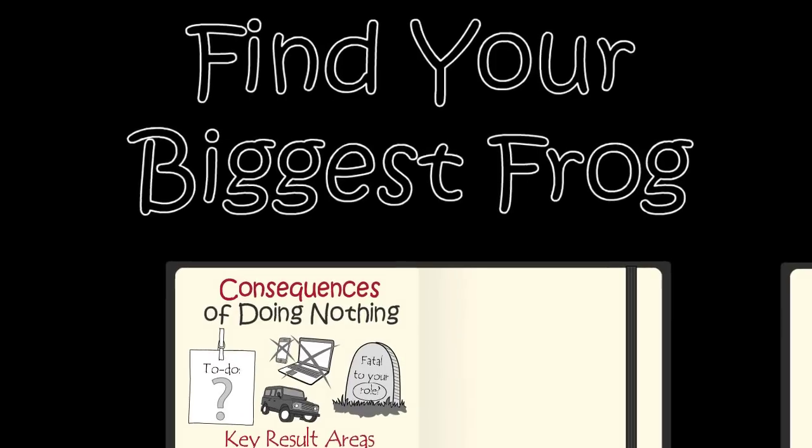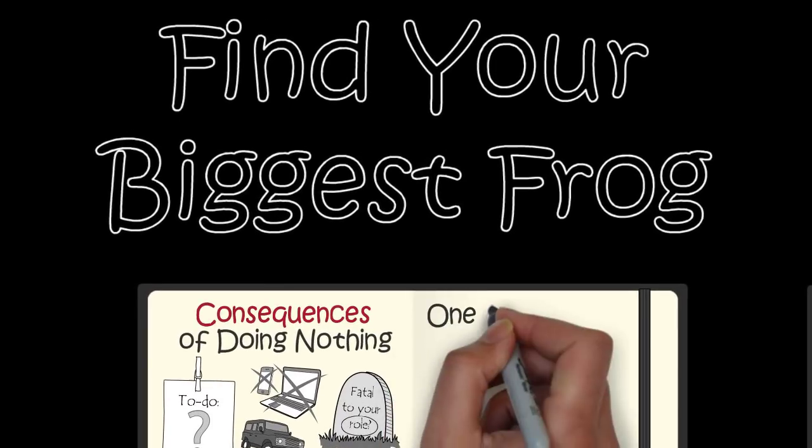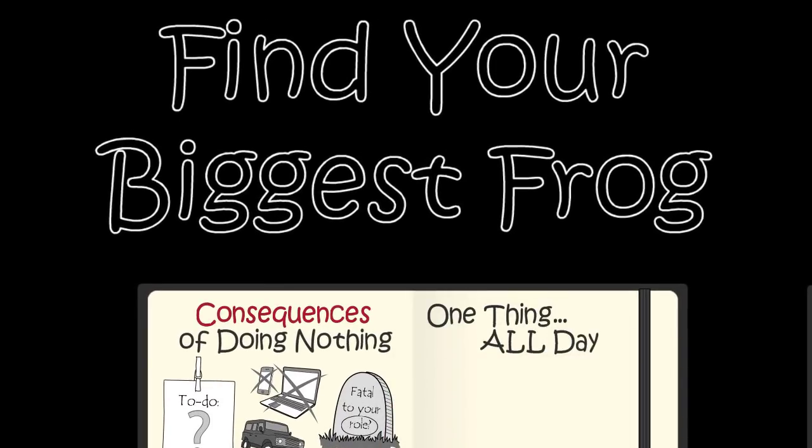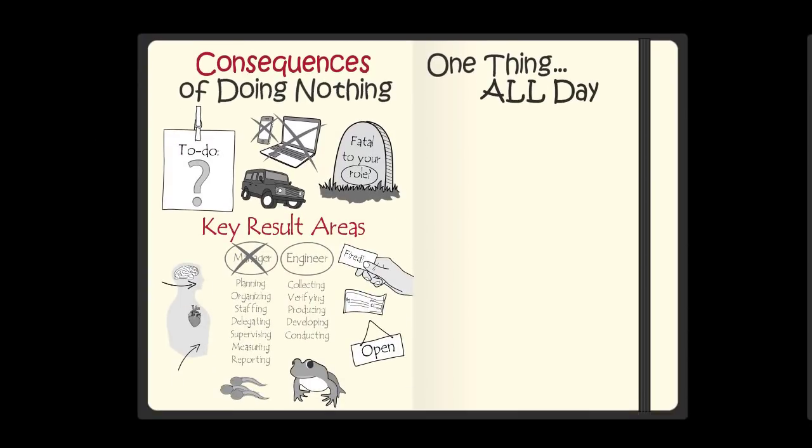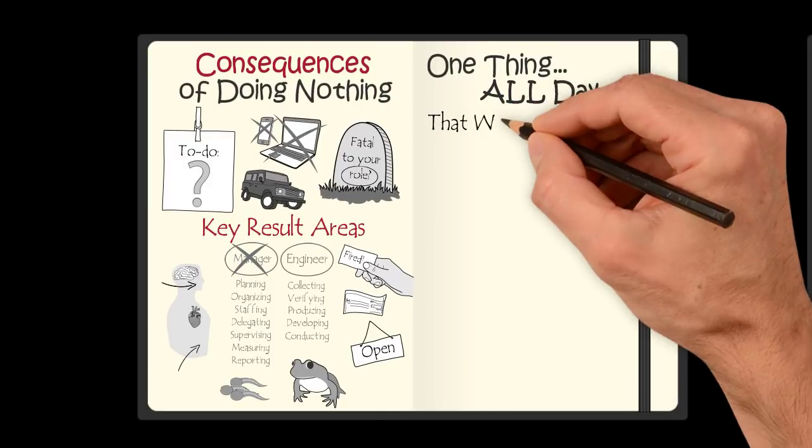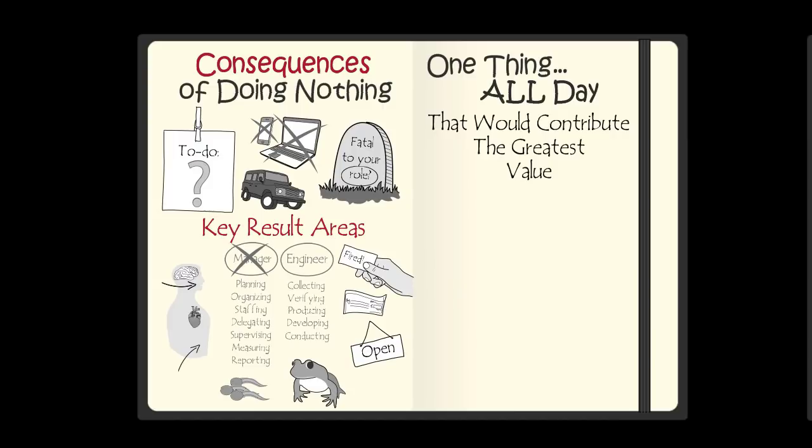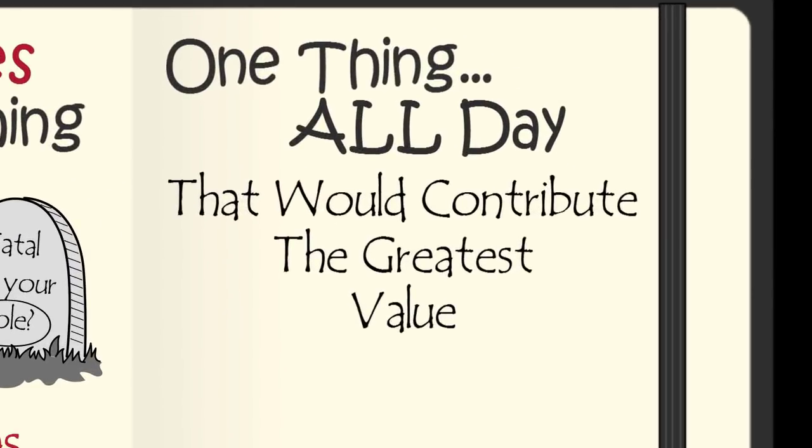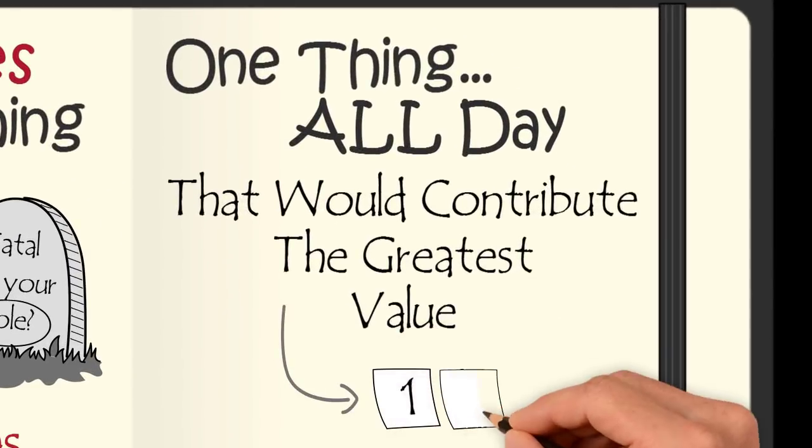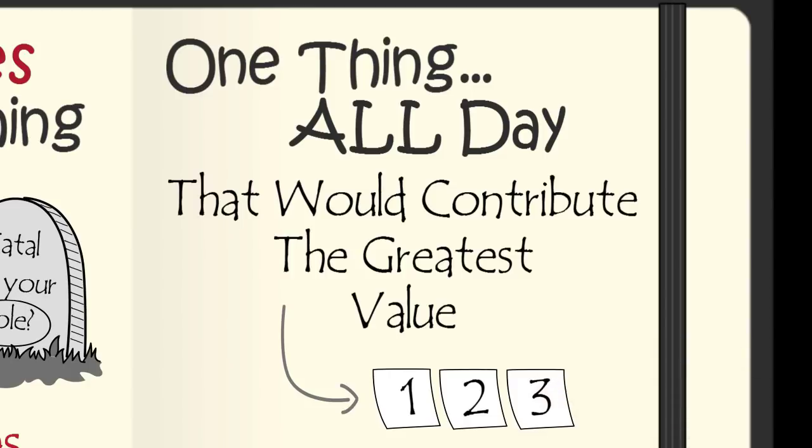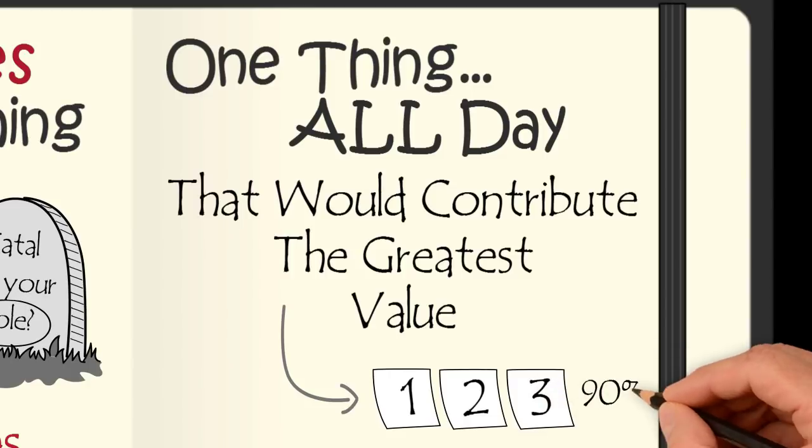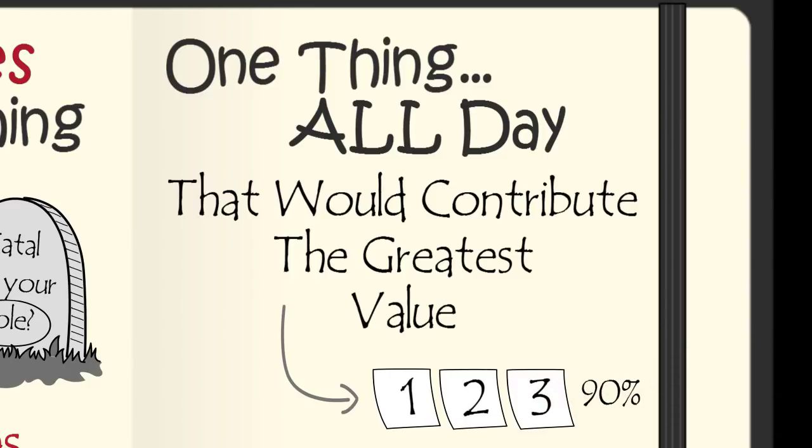The second step to finding your biggest frog is considering doing one thing all day. Of the things that you've identified to have long-term consequences on your key result areas, what one task could you do all day that would contribute the greatest value to your company? Brian Tracy says that if you ask yourself that question three times, the three tasks that you come up with will be 90% of the contribution you can provide your company.